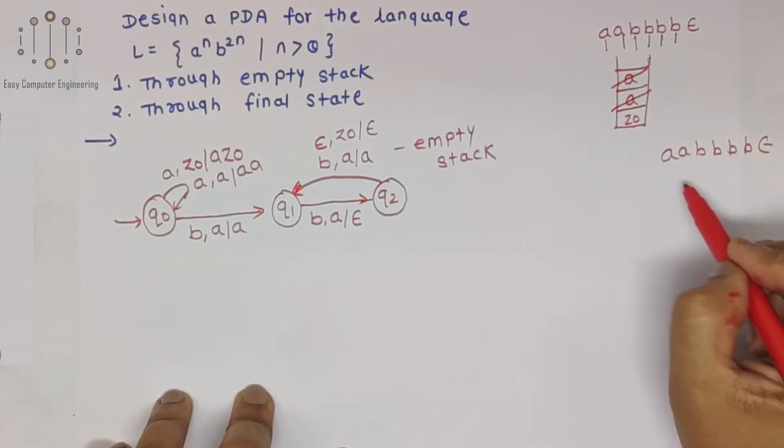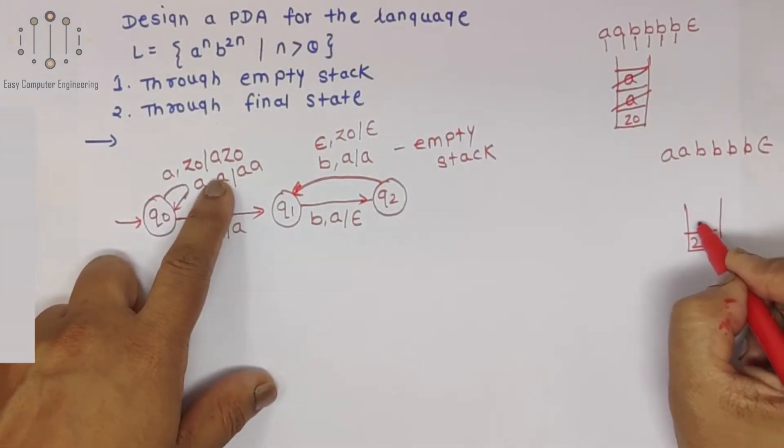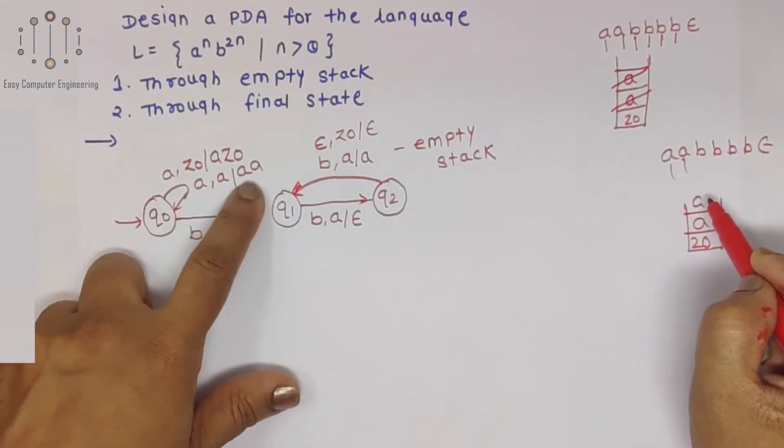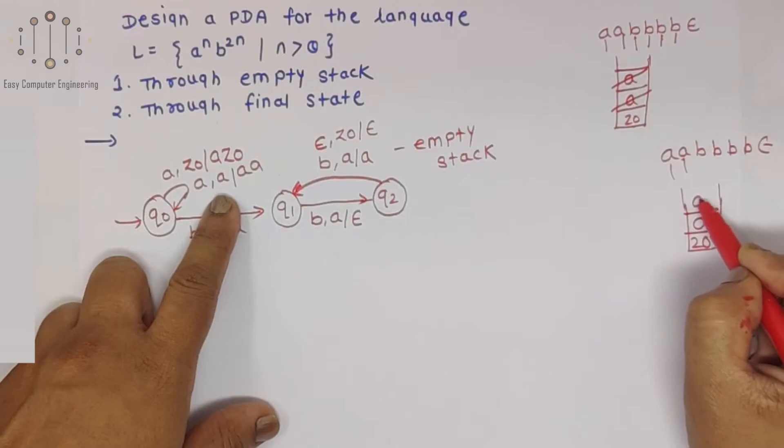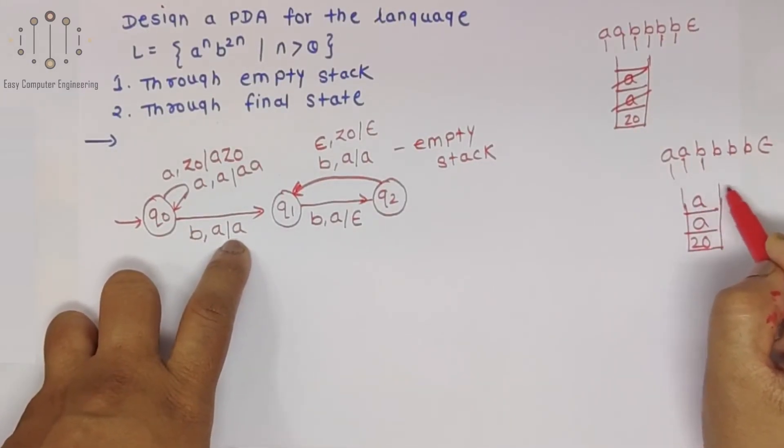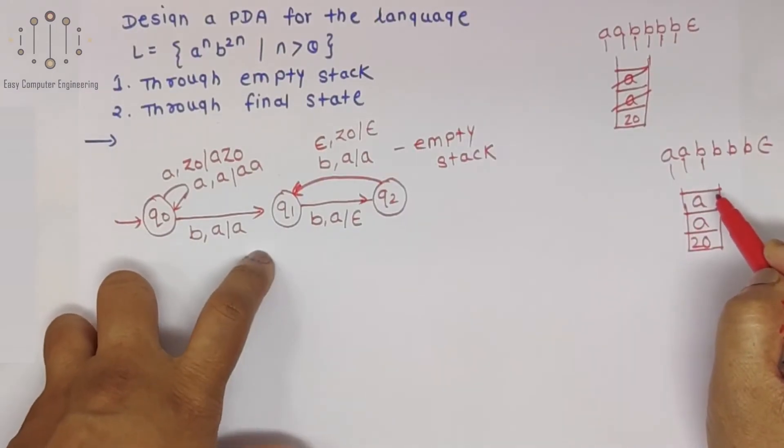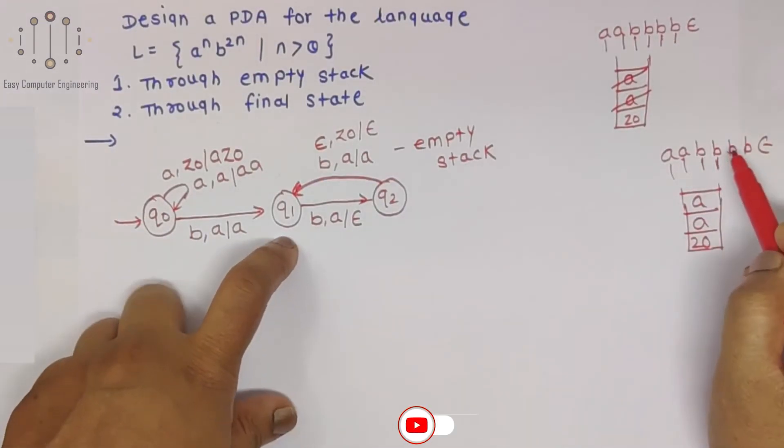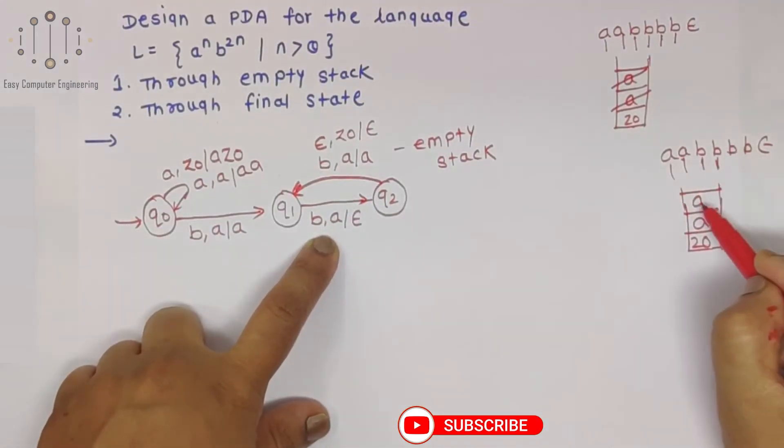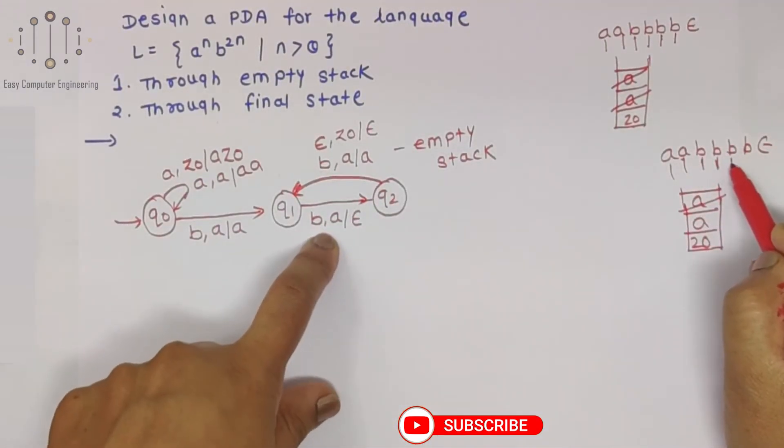First time A, Z0 is present in stack, so push A. Again there is A, push A using this transition. Now next is B. For this B, just read, no operation. Next B, pop the A.